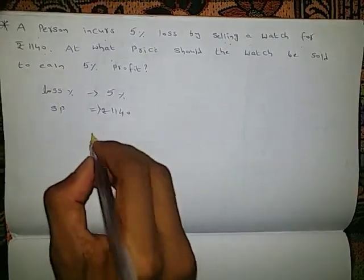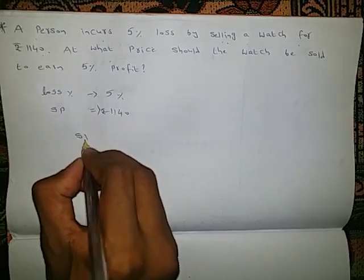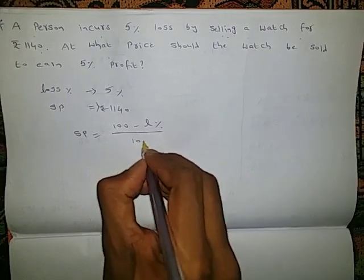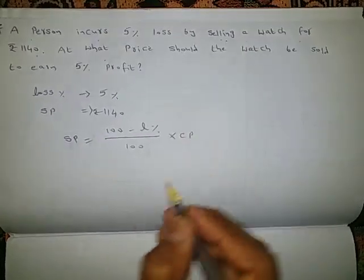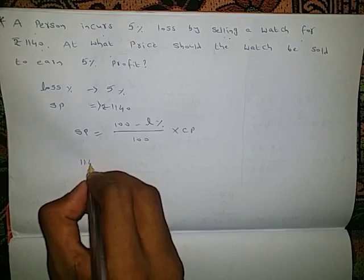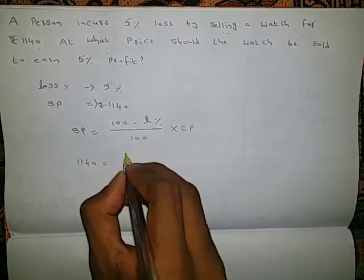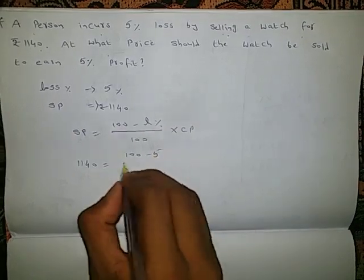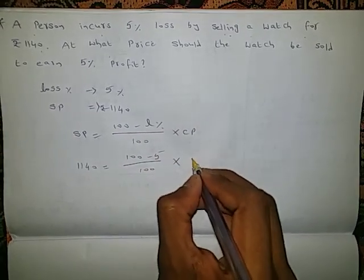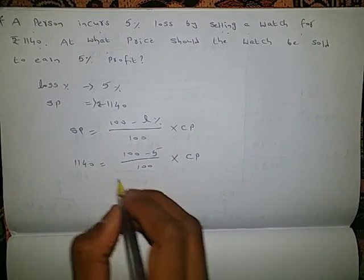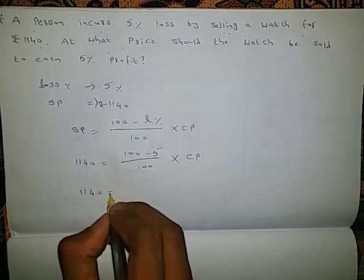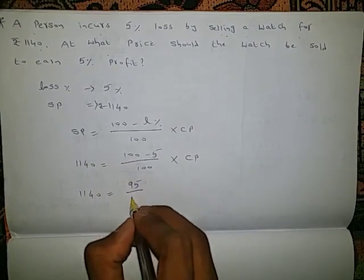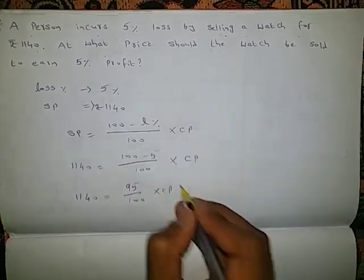So we will use the formula again. Selling price equals 100 minus loss percentage by 100, into cost price. Selling price is given as 1140, equals 100 minus loss percentage, which is 5, by 100, into cost price. We need to find out. So we will get 1140 equals 100 minus 5, which is 95, by 100, into cost price.